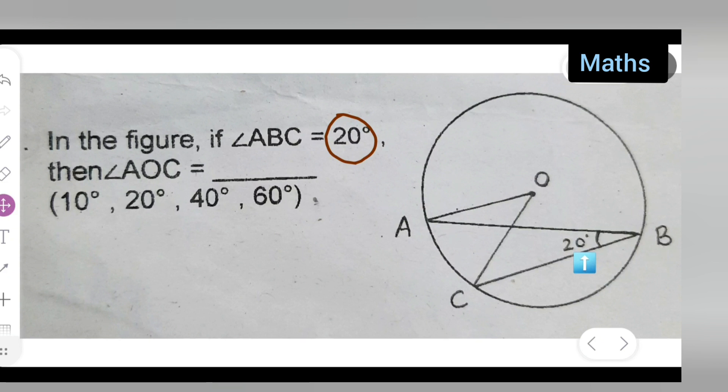Here, angle ABC is given to be 20 degrees. We need to find angle AOC over here. Let us see.